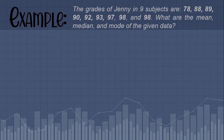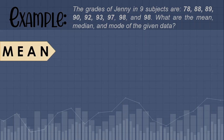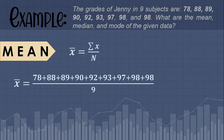Let's start with the mean. To find the mean, or x-bar, we get the summation of x over n. The summation of x means we add all the values in our given set of data. So x-bar is equal to 78 plus 88 plus 89 plus 90 plus 92 plus 93 plus 97 plus 98 plus 98,